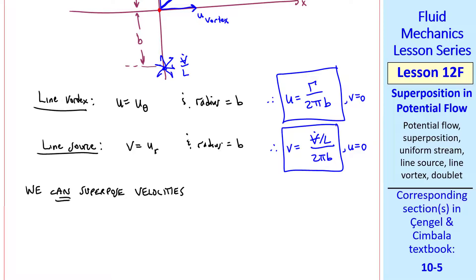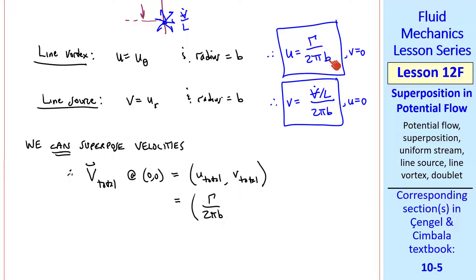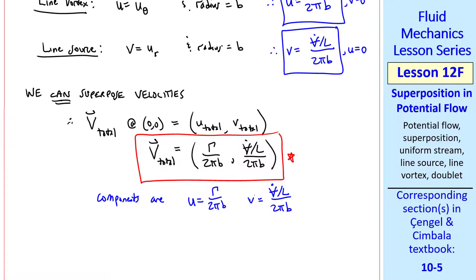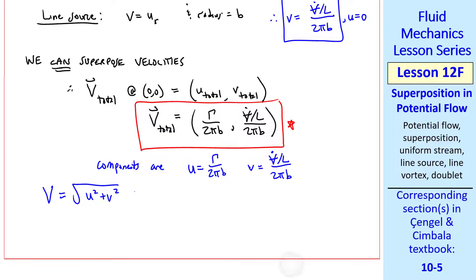As I mentioned previously, we can superpose velocities. Therefore, v total at the origin is a vector that consists of all the u components, u total, plus all the v components, v total. Well, this is gamma over 2 pi b from here, and there's no u component here. And v total is v from here and 0 from here. So this is our answer for v vector total. The components are just u equal gamma over 2 pi b, and v equal v dot over l over 2 pi b. The magnitude of the velocity is the square root of u squared plus v squared, and we plug in these two values to get capital V.